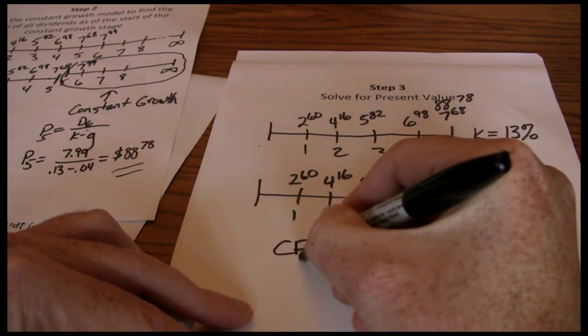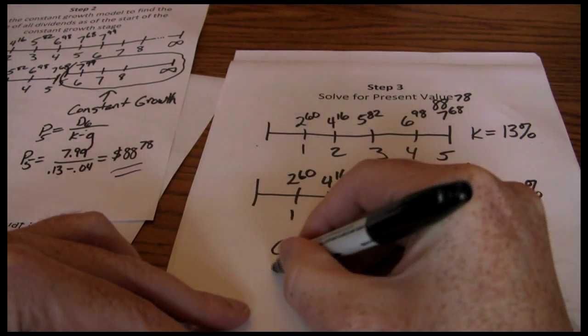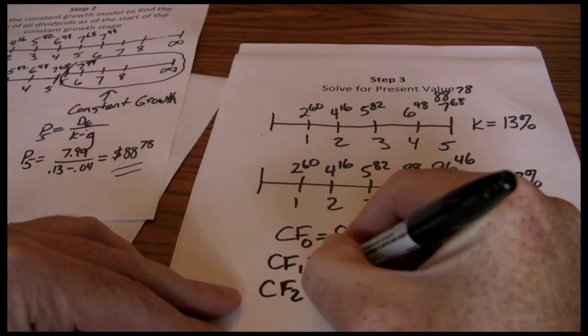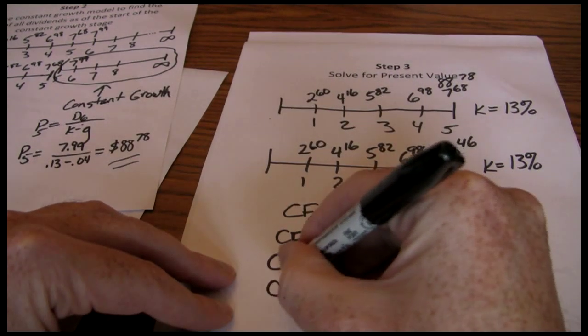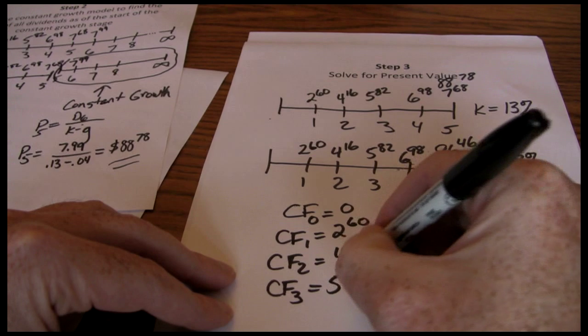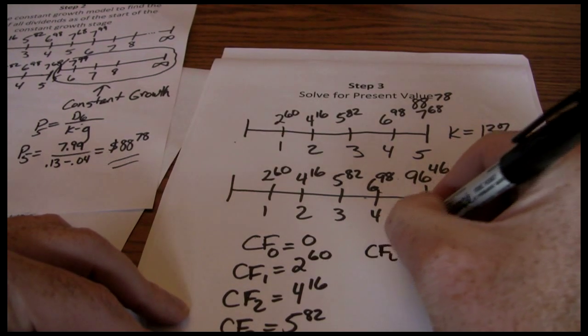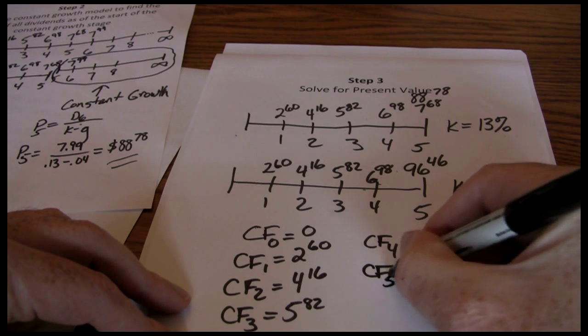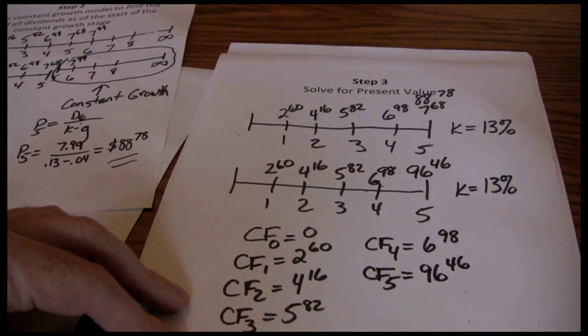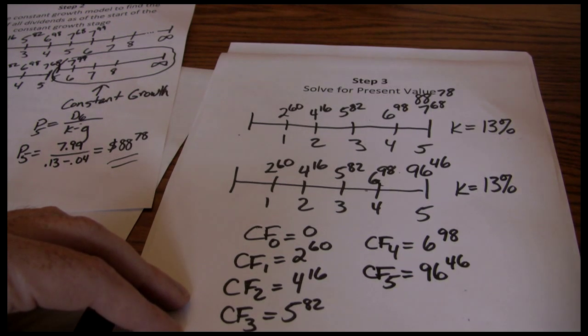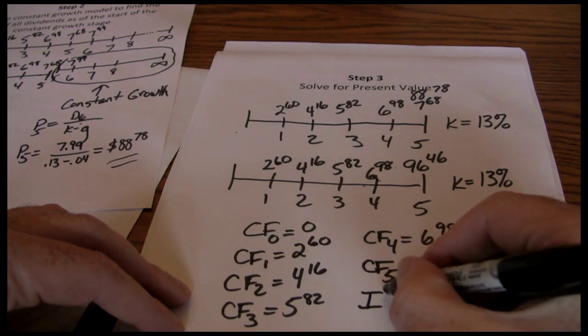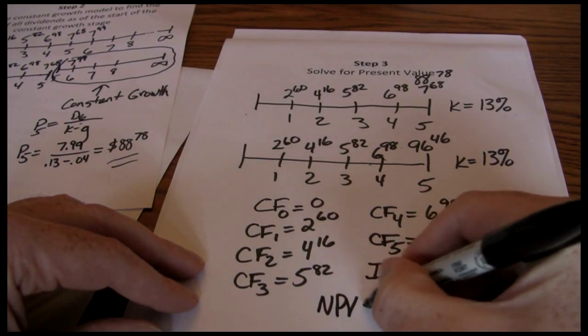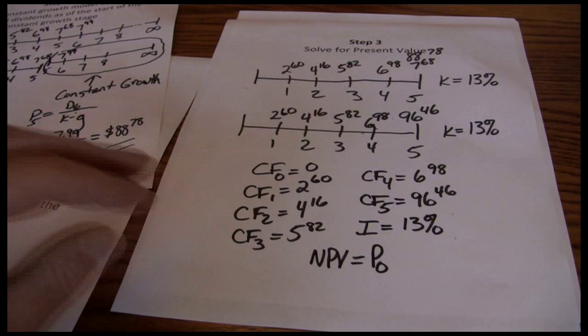In essence, what we're doing is: CF0 is zero, CF1 is $2.60, CF2 is $4.16, CF3 is $5.82, CF4 is $6.98, and finally CF5 is that $96.46 that combined the dividend year five and the price in year five. Our discount rate is 13%. Now we solve for the net present value, which is going to be the value of the stock today.